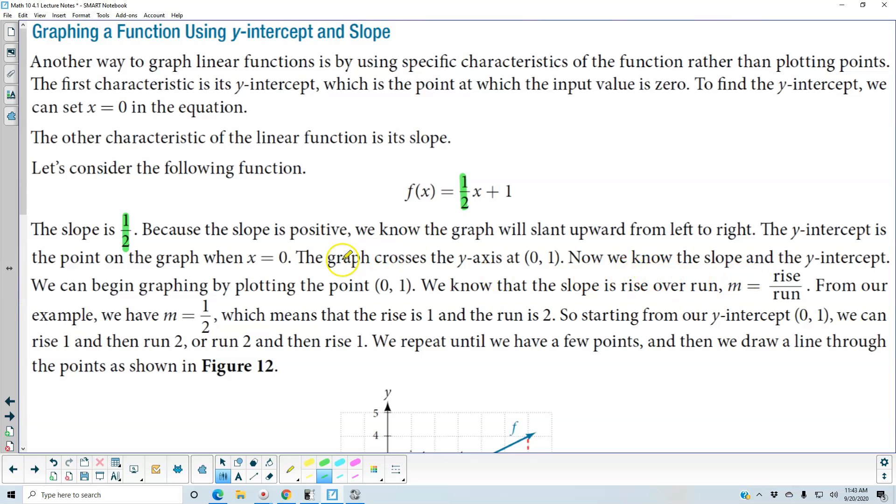Now we know the slope and the y-intercept. We can begin graphing by plotting the point zero one. We know the slope is the rise over the run.